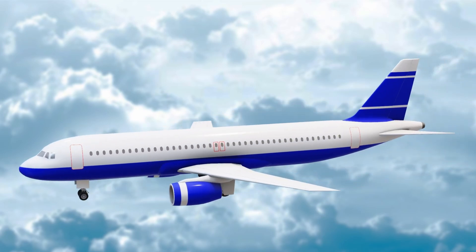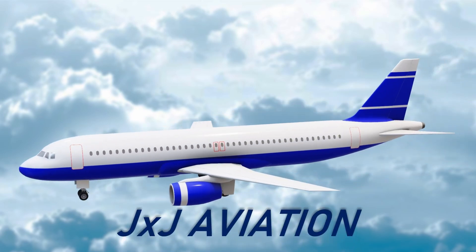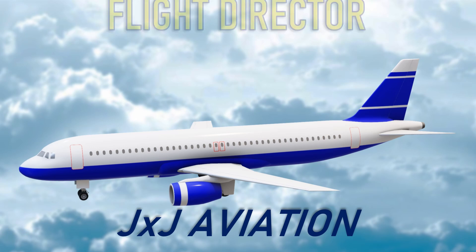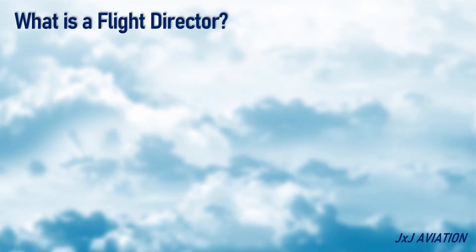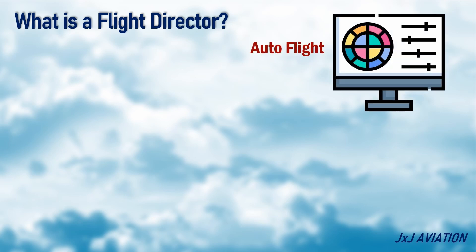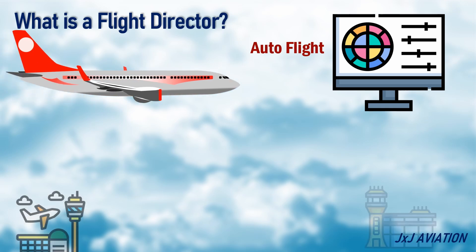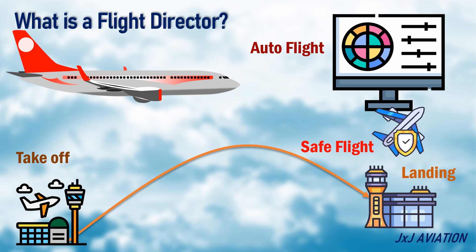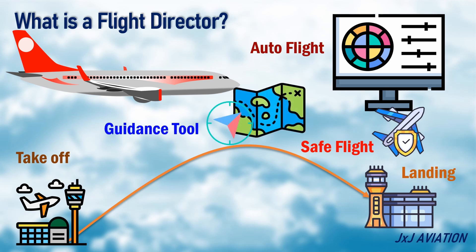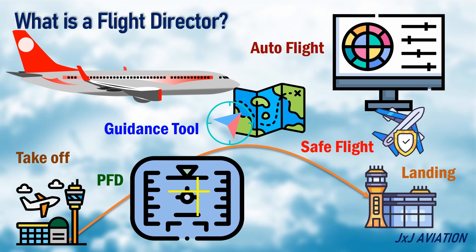Hello, welcome to JXJ Aviation. In this video we will be looking at what is a flight director in an aircraft and how they work. A flight director is a part of the automatic flight control system. All modern aircraft have flight directors that are used from takeoff till landing for a safe flight. The flight director is a guidance tool which is overlaid on the attitude indicator on the primary flight display. The flight director gives the required pitch and bank angles for an aircraft to fly on a particular path.